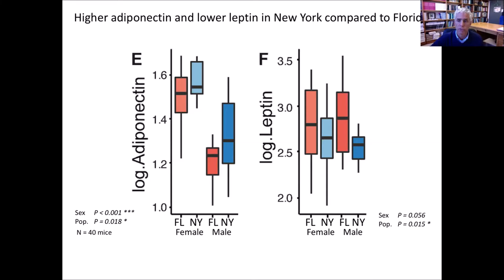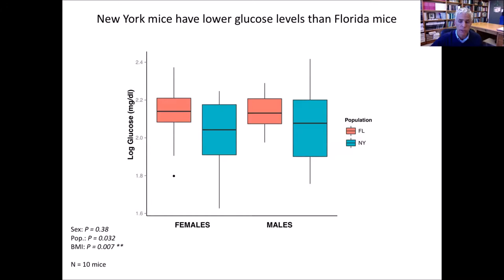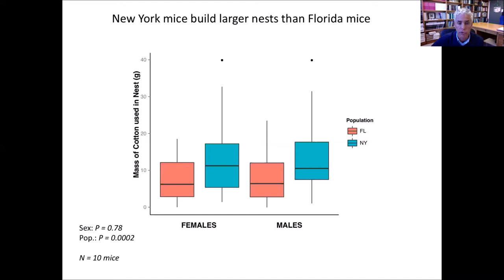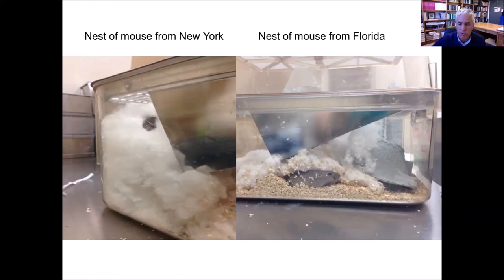We see higher adiponectin and lower leptin levels in New York compared to Florida, and differences in glucose levels between cold-adapted and warm-adapted mice. Mice from colder environments build larger nests than mice from warmer environments — even in a lab at 20 degrees Celsius with no thermoregulatory challenge — and this difference persists over many generations, suggesting it's genetically based. The assay is simple: we put cotton in the top of the hopper and measure how much they pull down in 24 hours. A New York mouse makes a giant nest; Florida mice make a much smaller one; and Brazil mice often just sit on top of their cotton.